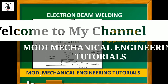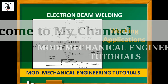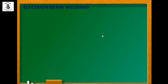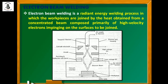Welcome to Modi Mechanical Engineering Tutorials. In this video I will be explaining the electron beam welding process. The working principle: electron beam welding is a category of radiant energy welding process in which the workpieces are joined by heat obtained from a concentrated beam composed primarily of high-velocity electrons that impinge onto the surface to be joined.